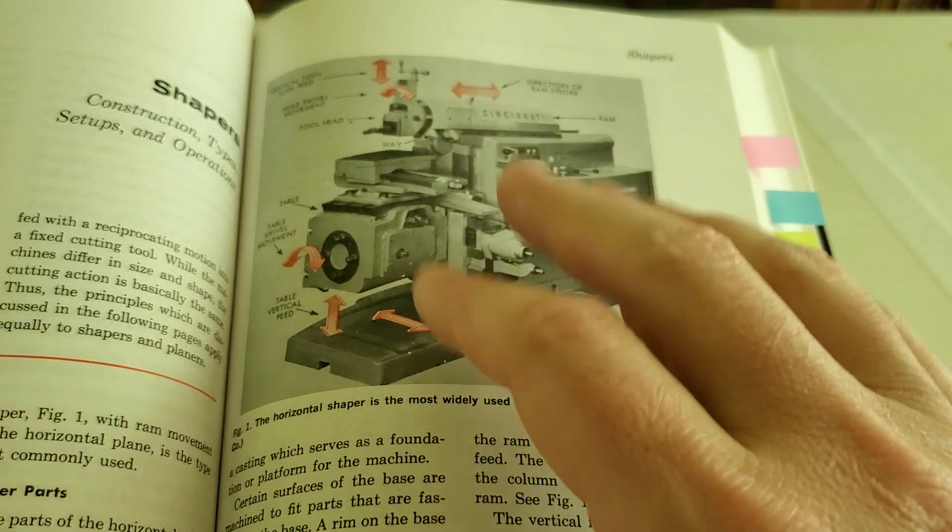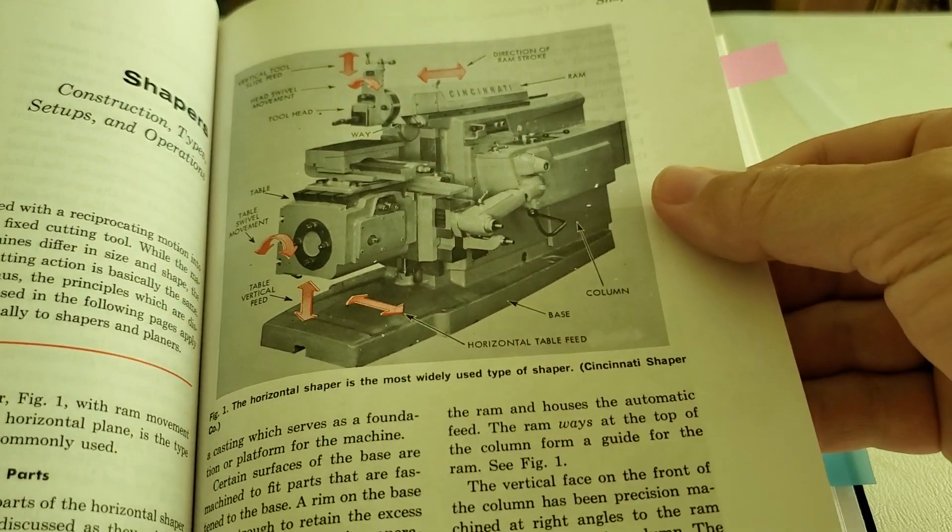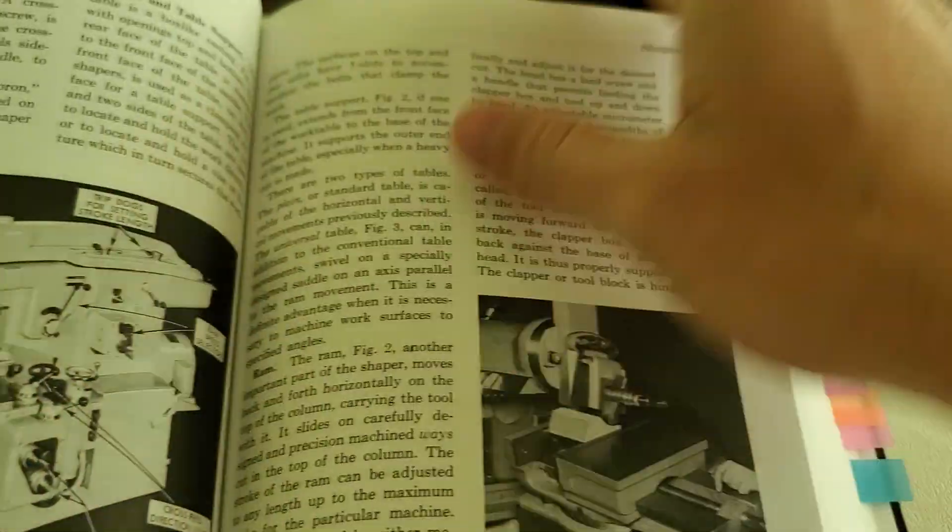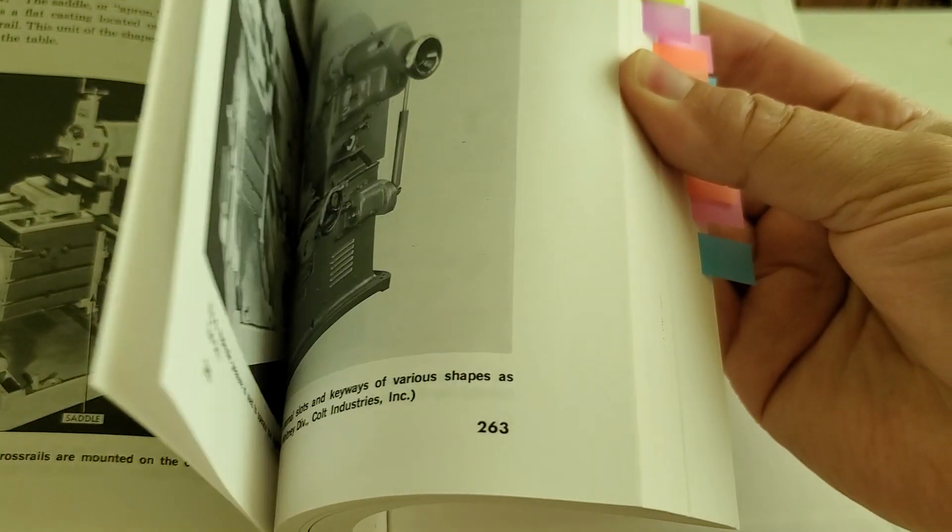So having something like this that is a little bit older is nice, because it shows a lot of setups and operations that you can do on the shaper. And that's information that you just don't find in modern textbooks anymore.